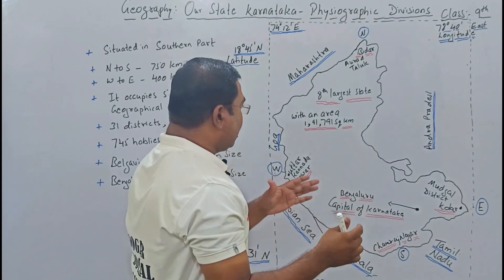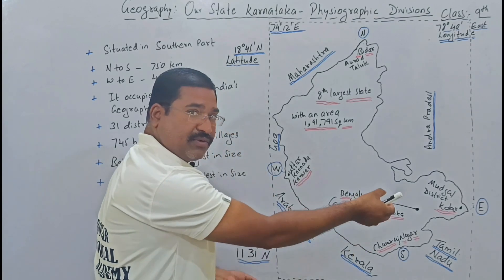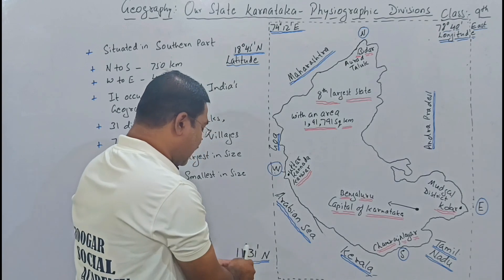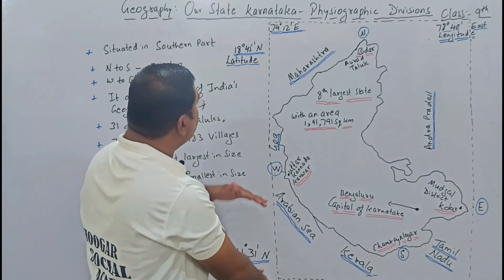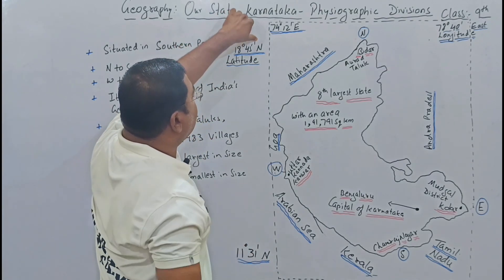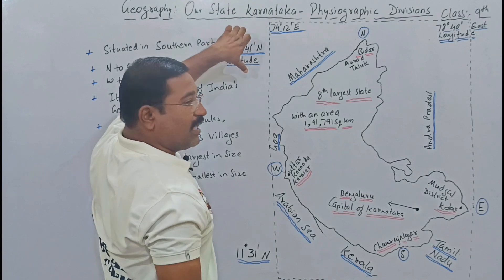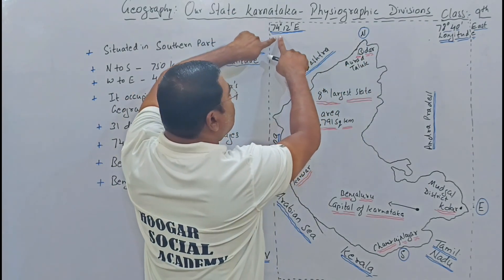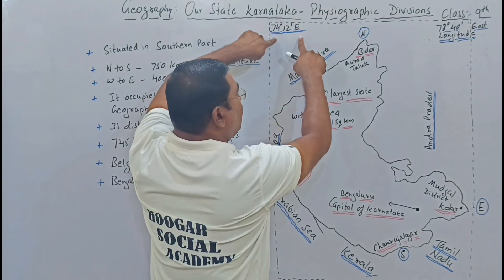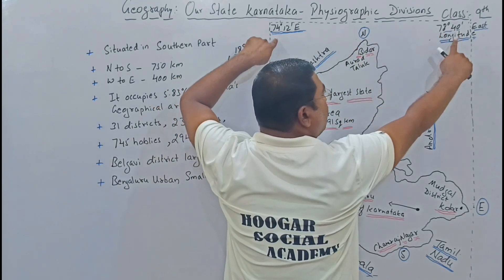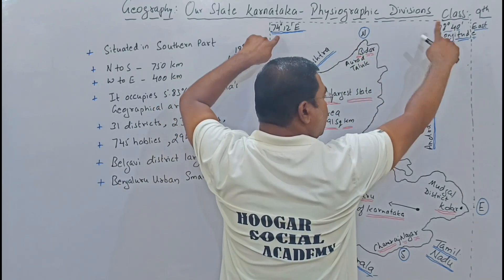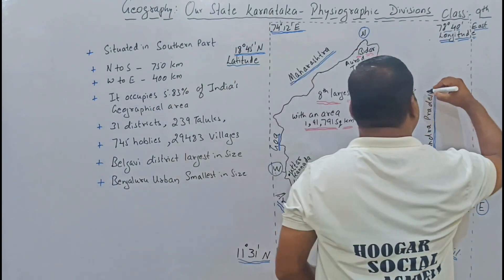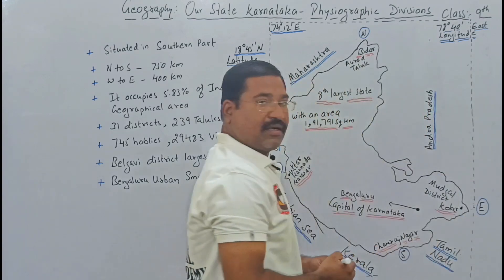To repeat: in terms of latitude, Karnataka lies from 11 degrees 31 minutes north to 18 degrees 45 minutes north. In terms of longitude, it extends from 74 degrees 12 minutes east to 78 degrees 40 minutes east. Within these boundaries we get our state Karnataka.